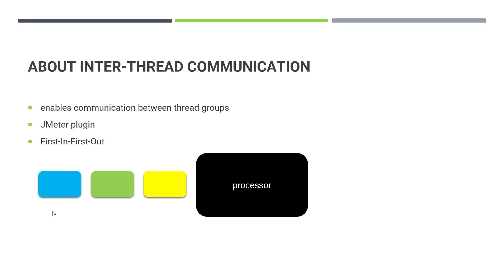By default, JMeter thread groups don't talk to each other. But there are certain use cases where you have to enable the communication between two or multiple thread groups. That is where you have to enable communication by leveraging a JMeter plugin, because there is no out-of-the-box support in JMeter.